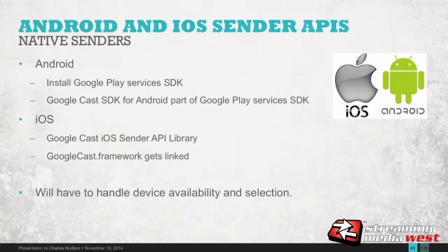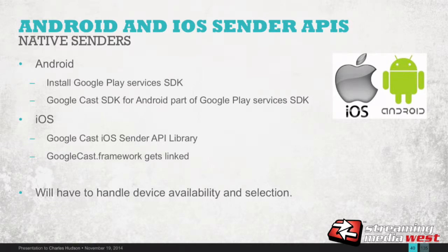You can see how companies are adding their special receiver apps, and Google provides lots of samples to look at. For native senders with Android, you install Google Play Services, which includes the Google Cast SDK — you don't have to download Google Cast independently. With iOS, there's a sender API library you download, install, and link that framework directly into your project. With either native platform, since you're not inside the Chrome browser, you'll need to handle the device selection for the user — propagating and showing available devices and allowing them to select. Chrome handles that via its extension.